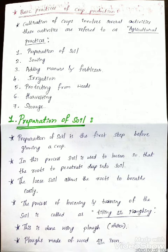Other agricultural activities include sowing, adding manure and fertilizer, irrigation, protecting from weeds, harvesting, and storage. Now let's talk about the preparation of soil. Preparation of soil is the first step before growing a crop.